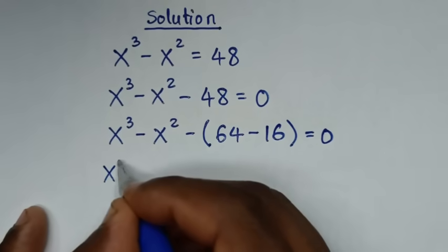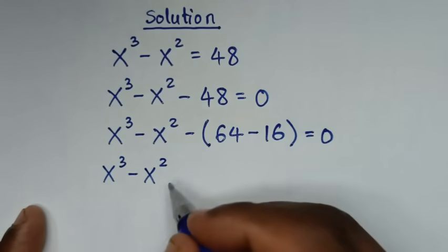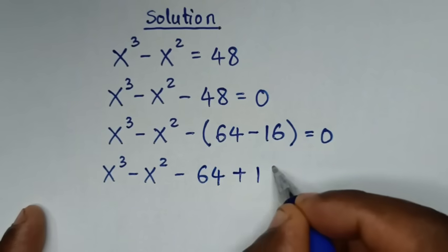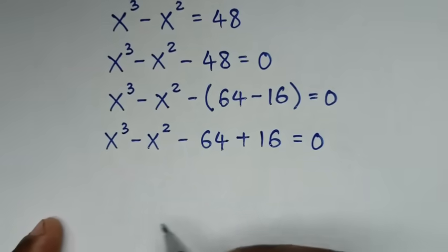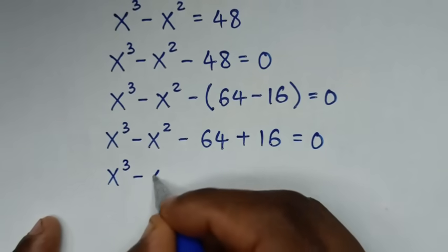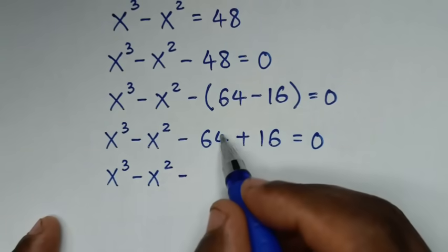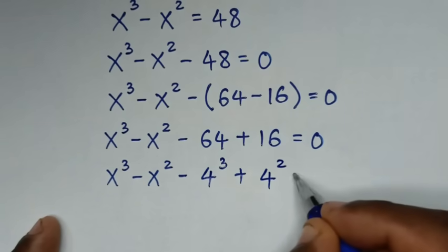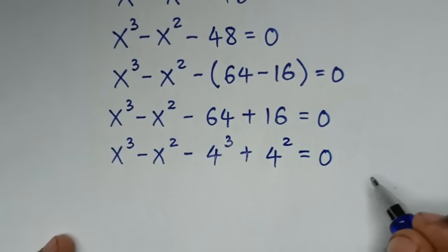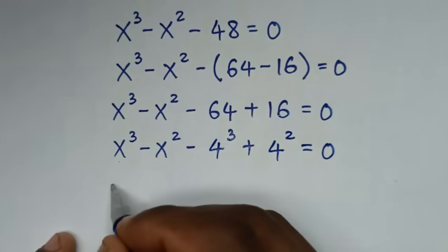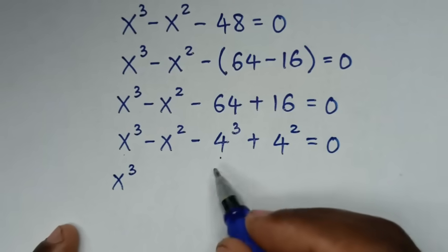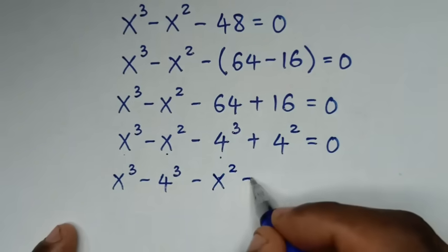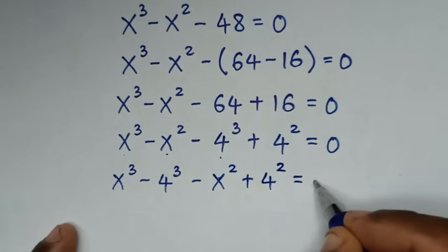In the next step, it will be x³ minus x², here it will be minus 64, and minus minus 16 becomes plus 16, is equal to 0. Then we write this as x³ minus x² minus 4³ plus 4² is equal to 0.